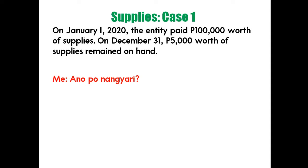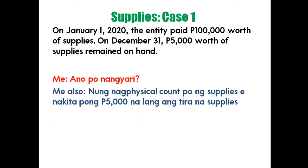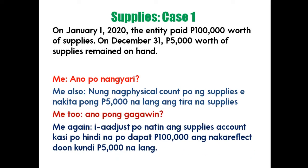Case 1 problem: On January 1, 2020, the entity paid 100,000 worth of supplies. On December 31, 5,000 worth of supplies remained on hand after physical count. What do we do? We adjust the supplies account because it should no longer show 100,000 — only 5,000 should remain.